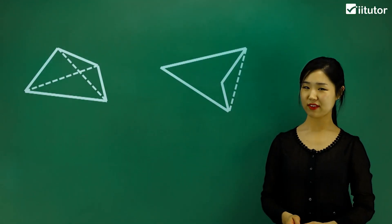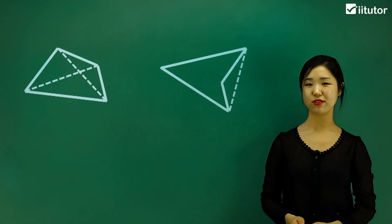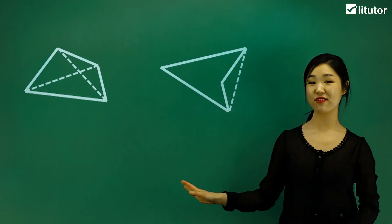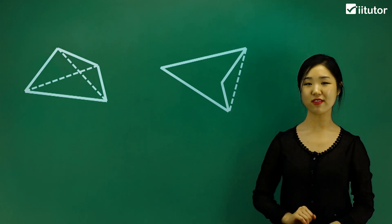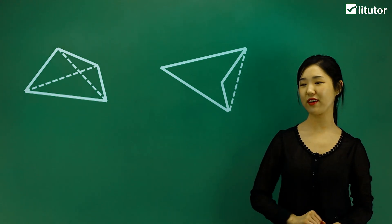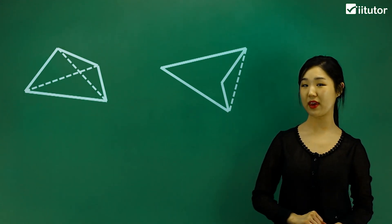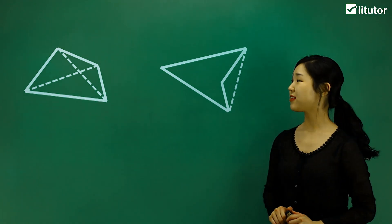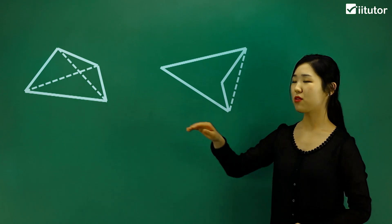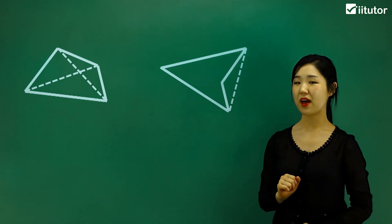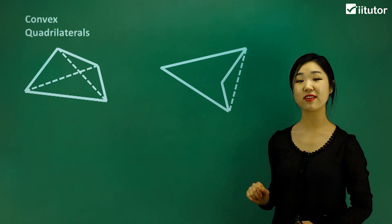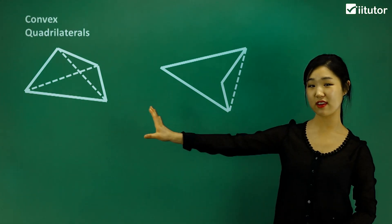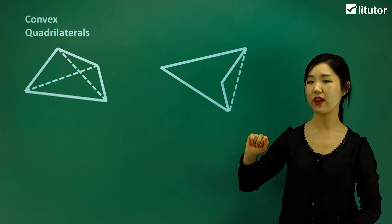Let's look at some convex quadrilaterals. We've got two little figures over here on the board. Watch carefully, because one of them is going to be a convex quadrilateral. Starting with the first one, this is the convex quadrilateral — this is an example of one.